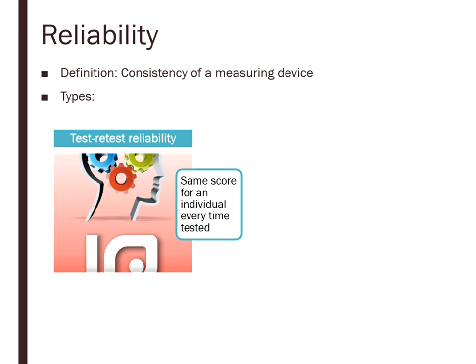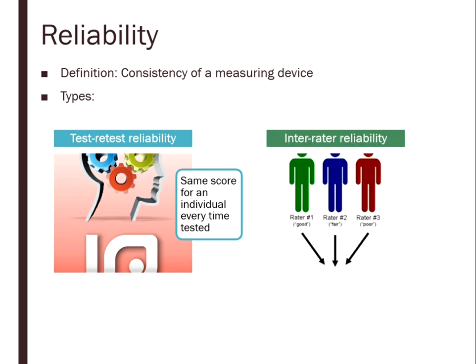Inter-rater reliability involves multiple raters observing some kind of behavior. If three raters observe the same behavior and one rates it 'good,' another 'fair,' and another 'poor,' that's an example of poor inter-rater reliability — they are not agreeing with each other. What we'd like to see is the same basic scores across all raters. If raters see the same behavior this differently, we'd have to say the behavior is pretty ambiguous and maybe we can't include it in whatever we're measuring.